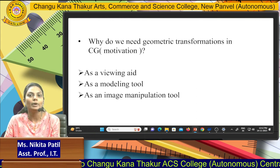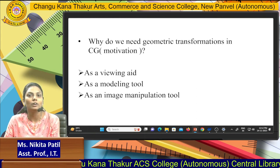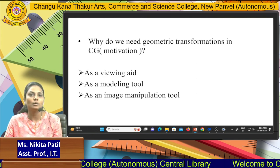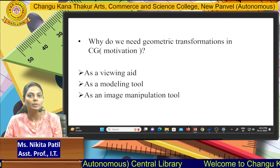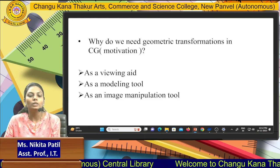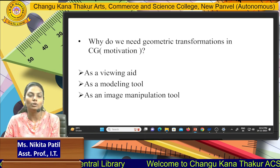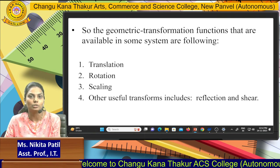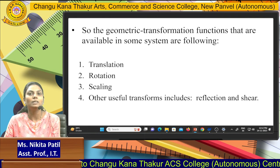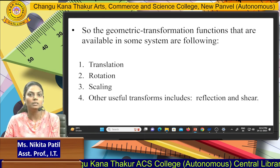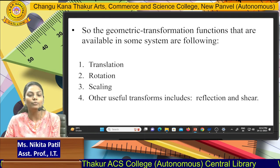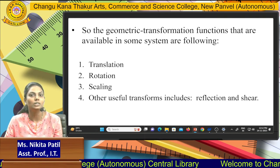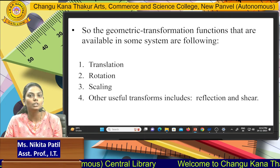Why do we need geometric transformations in computer graphics? The main reasons are: as viewing tools, as modeling tools, and as image manipulation tools. The types of geometric transformations available in a system are: first is translation, second is rotation, third is scaling, and others include reflections and shearings.